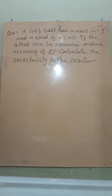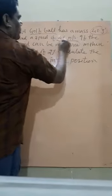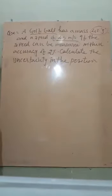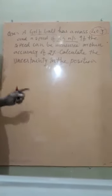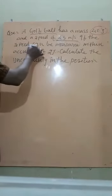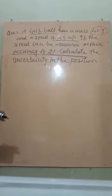What is the question? A golf ball has a mass 40 gram and a speed of 45 meters per second. That is, it is moving with the velocity of 45 meters per second. If the speed can be measured within accuracy of 2%, but the speed which is given 45 meters per second is not actually its perfect speed.